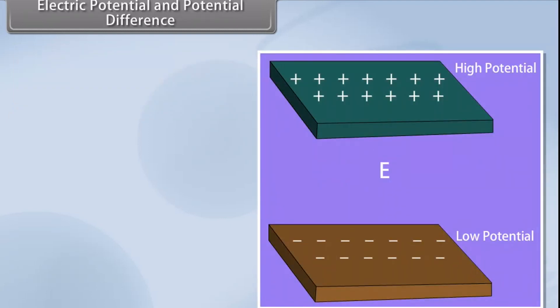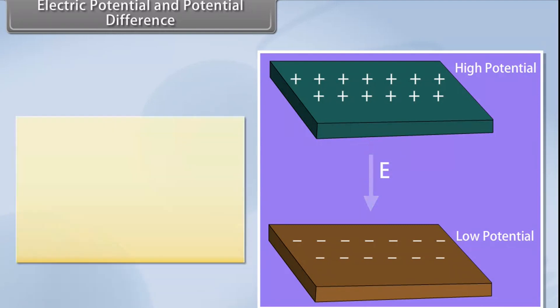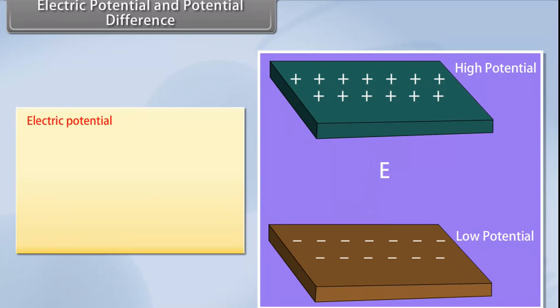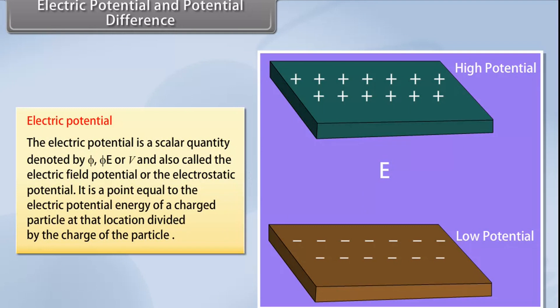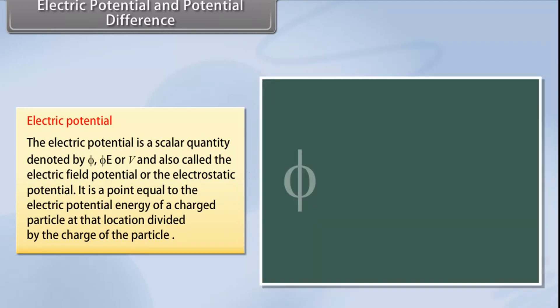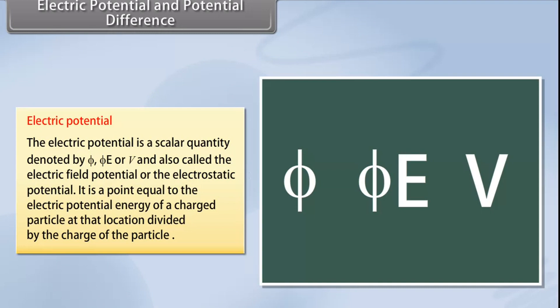Let us look at the concepts of electric potential and potential difference. Electric potential is a scalar quantity denoted by E or V. It is a point equal to the electric potential energy of a charged particle at the location divided by the charge of the particle.